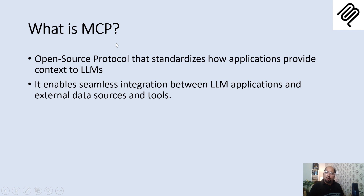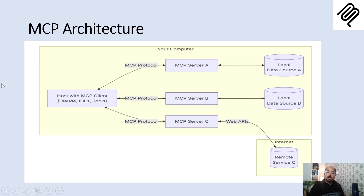MCP enables seamless integration between LLM applications and external data sources and tools. Data sources meaning it could be Confluence, Jira, GitHub, GitLab, or any third-party tool. This is the architecture: we will have an MCP client — it could be Claude — which has the capability to talk to an MCP server. The MCP server is a program which has integration with a data source.